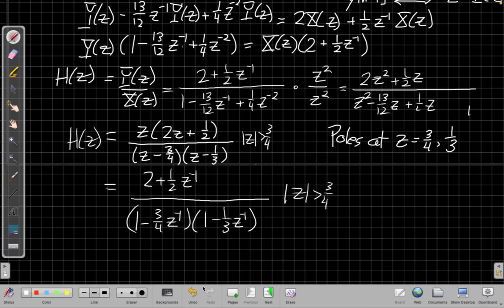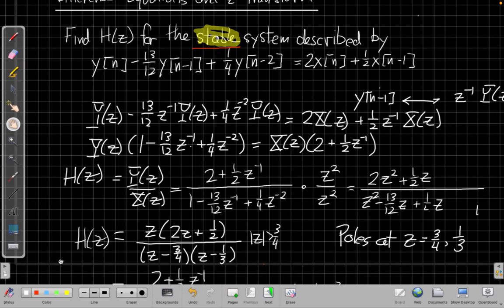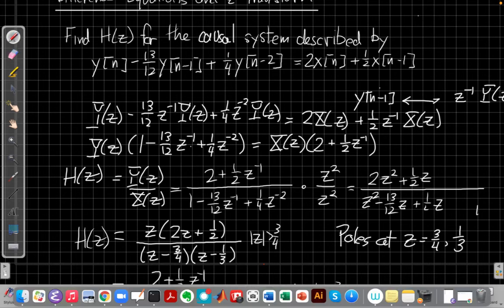which is instead of the stable system, I go back up here and I say, what if I look for the causal system? So if I want the causal system with this difference equation, well, causal systems have a right-sided impulse response. Right? We know causal is right-sided. Causal systems have right-sided impulse responses.